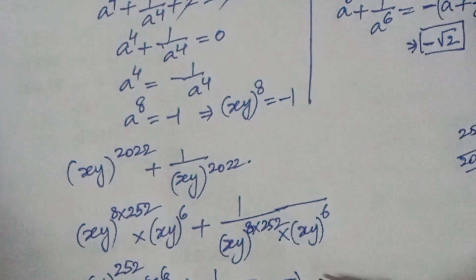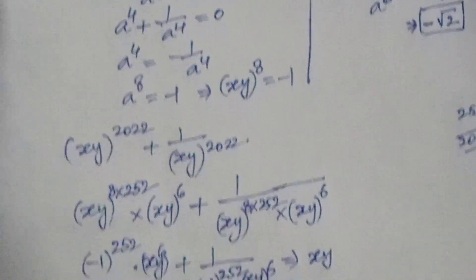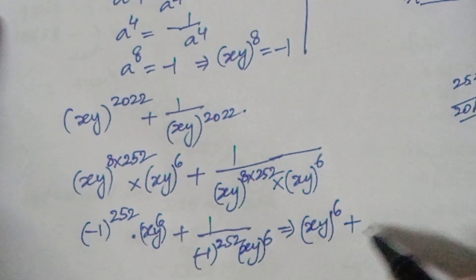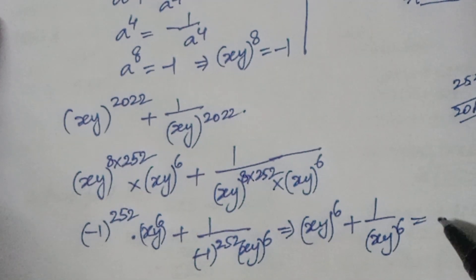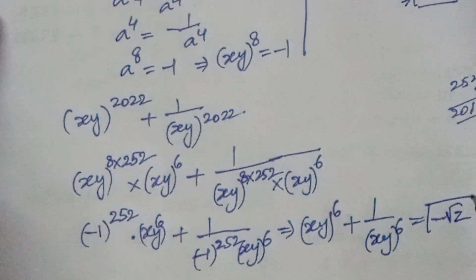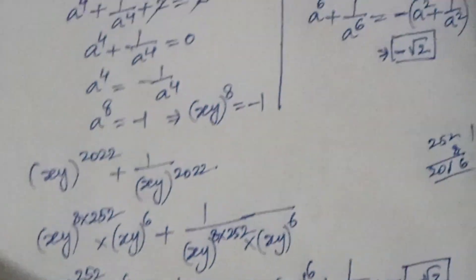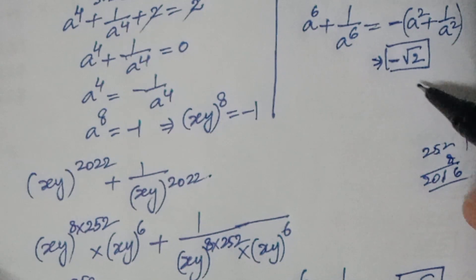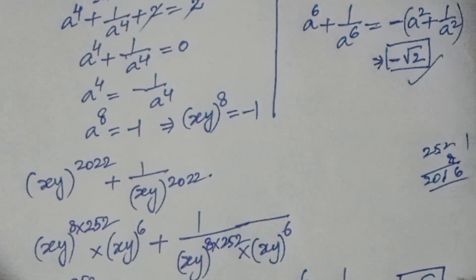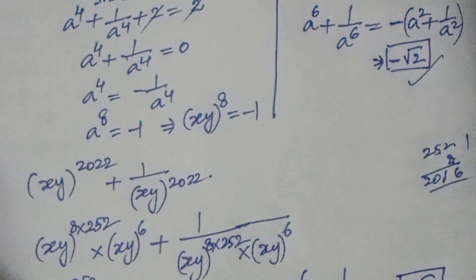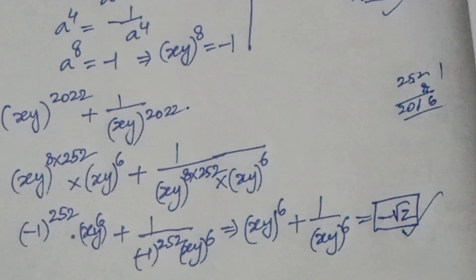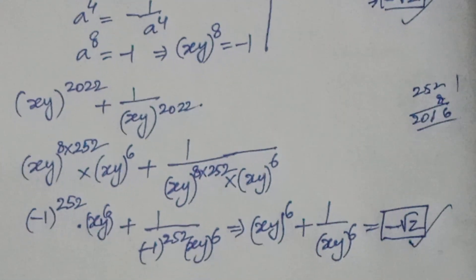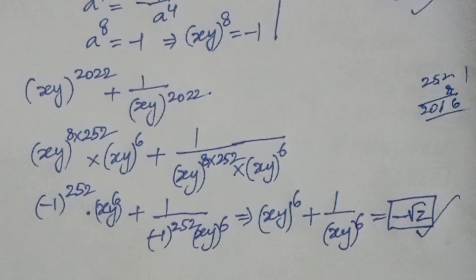From this we get xy to the power of 6 plus 1 by xy to the power of 6, which is nothing but minus root 2. So the answer is minus root 2. I hope you liked the video — thank you for watching IONCGMAX. If you liked the video, subscribe and share it with your friends.